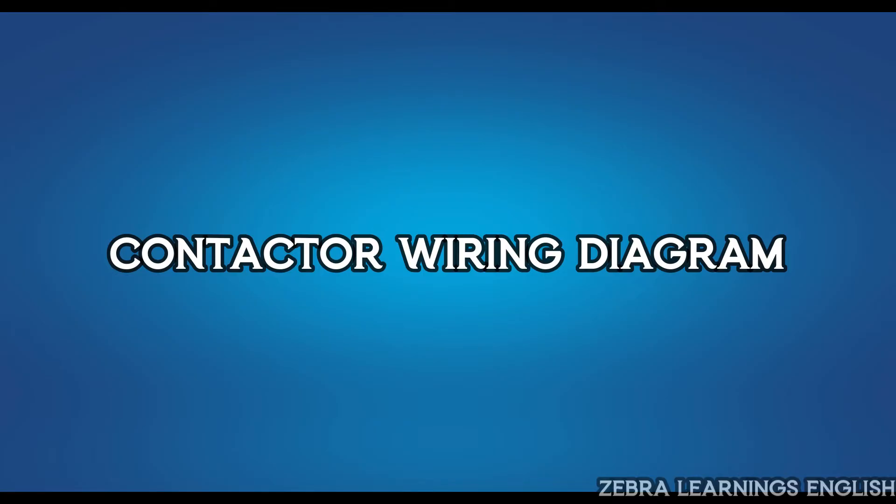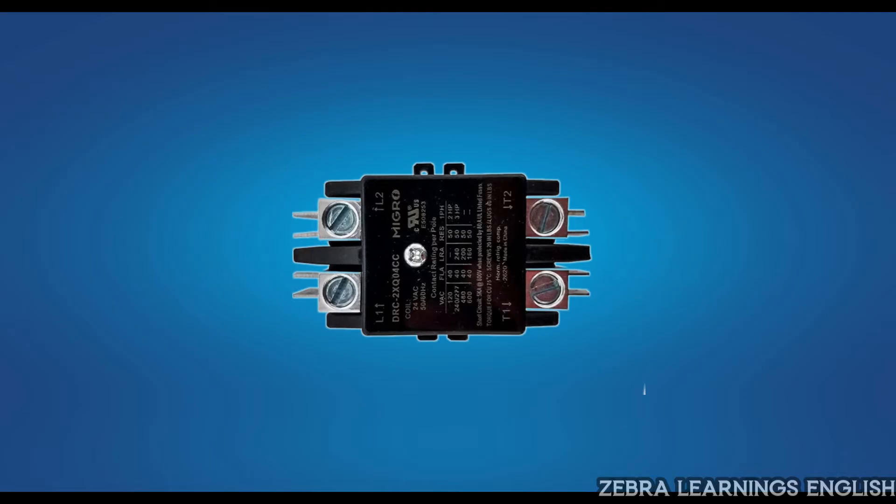Contactor wiring diagram is a simple method. We use a two-pole contactor for this. In the contactor, L1 and L2 are marked as inlet ports. T1 and T2 are marked as outlet ports.